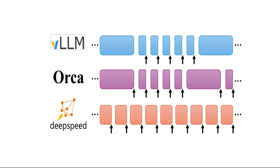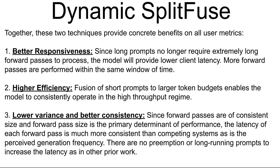Looking at the paper's illustration of continuous batching strategies, each block shows the execution of a forward pass. An arrow indicates forward passes that have sequences with one or more tokens generated. vLLM performs either token generation or prompt processing in a forward pass. Orca runs prompts at their complete length alongside generation. In Dynamic Split Fuse, things are different — it performs dynamic composition of fixed-size batches composed of both generation and prompt tokens together.